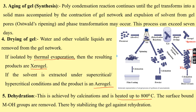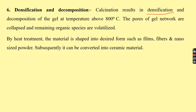Step four is drying: water and volatile liquids are removed from the gel network. If removed by thermal evaporation, the product is xerogel; if removed under supercritical or hypercritical conditions, the product is aerogel. Step five is dehydration: the aerogel or xerogel is subjected to calcination at 800°C to remove surface-bound M-OH groups, stabilizing the material. Step six is densification at 800°C, where pores of the gel network collapse, remaining organic species volatilize, and ceramic nanomaterials are obtained.